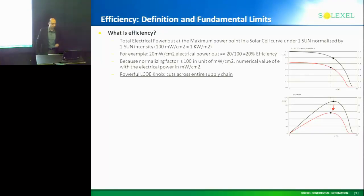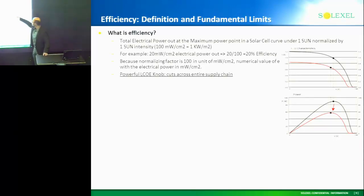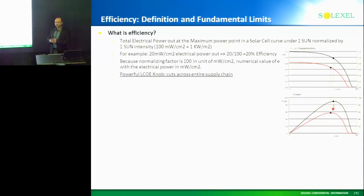Now let's look at the red curve. The red curve corresponds to where, suppose it's cloudy, so the illumination dropped. As illumination dropped, your maximum power point changed. So if you're still biased at the old point, you're not reaping the best benefits. There are electronic chips which go in the modules called MPPT — maximum power point trackers. These are little integrated circuits whose only job is to constantly look at the illumination and bias the cell at the maximum power point.